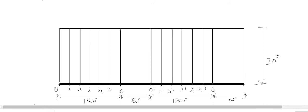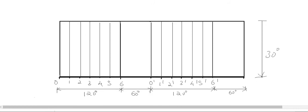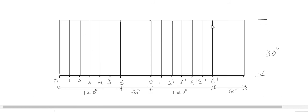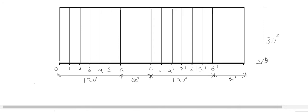For cycloidal motion, we can draw the same rectangle and divide it into equal number of parts. I recommend dividing into an even number of parts, preferably 6, because it is easier to divide a circle into 6. We need a circle division in this method.